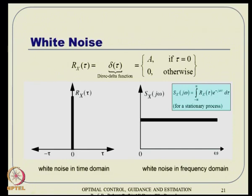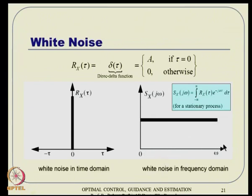The same autocorrelation concept can be interpreted in the frequency domain. If you compute the Fourier transform of R_x(τ) (for a stationary process), it turns out to be a constant number regardless of frequency ω — meaning white noise contains all frequency components equally. Plotting it as a function of ω gives a flat, constant spectrum, which is the frequency-domain interpretation of white noise.